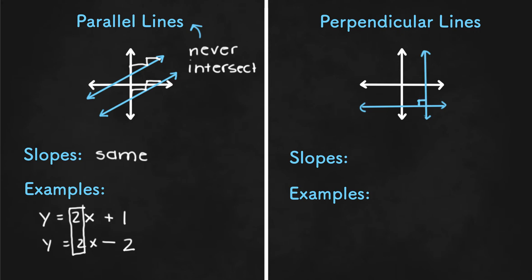Now, a perpendicular line might also look something like that on the graph, where it still meets at a right angle, but not vertically, or they don't have vertical and horizontal lines. And the slopes of perpendicular lines are opposite reciprocals.